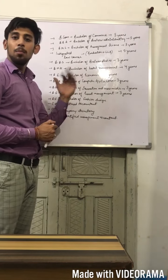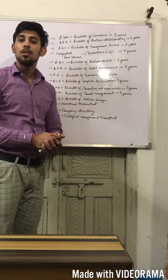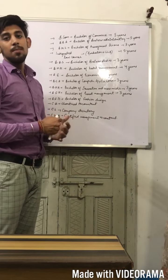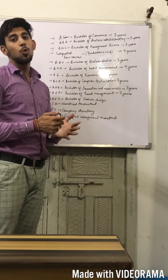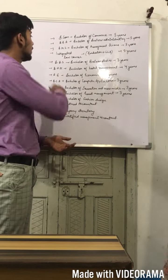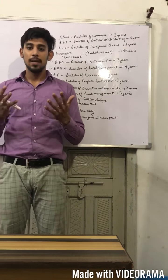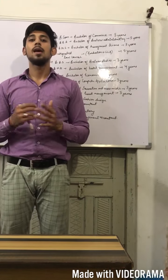Number 3 is BMS, Bachelor of Management Science. This is a management related course with very good scope. You can try it for this. The number 4, the next one is Integrated Law Course. Basically, it is a combination like graduation and LLB. So, you can try it for this.